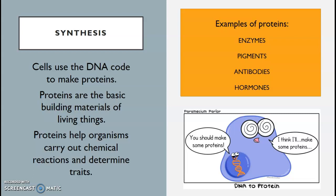Proteins are the basic building materials of living things. Some examples of proteins are enzymes, pigments, antibodies, and hormones. These proteins help organisms carry out chemical reactions and determine traits of organisms.